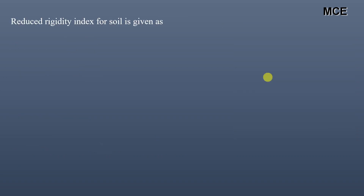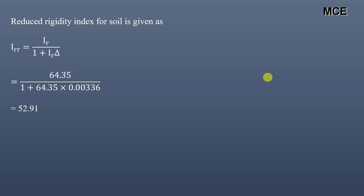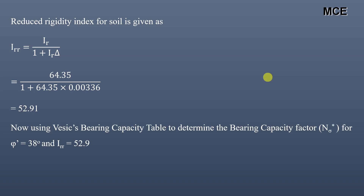The reduced rigidity index is given as I_rr = I_r / (1 + I_r × Δ). Substituting the values of I_r = 64.35 and Δ = 0.00336, we get I_rr = 52.91.